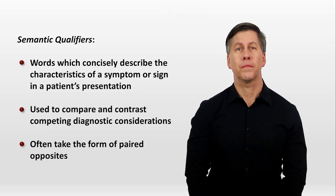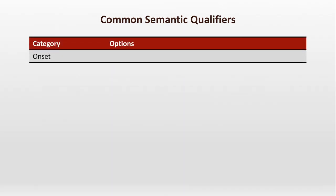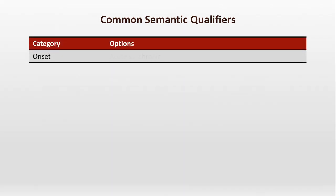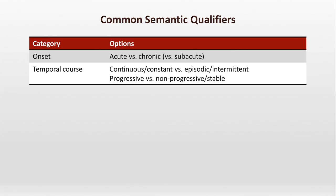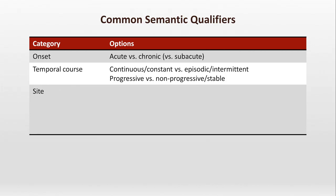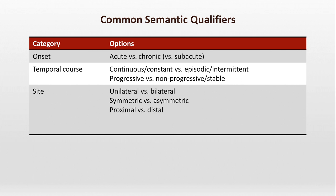Some examples. When describing the onset of a symptom, it can be described as acute versus chronic, or subacute if it falls somewhere in between. The temporal course can be described as continuous or constant versus episodic or intermittent. The site of a symptom or sign can be described as unilateral versus bilateral, symmetric versus asymmetric, proximal versus distal, diffuse versus localized or focal, or monoarticular versus polyarticular for joint symptoms specifically.